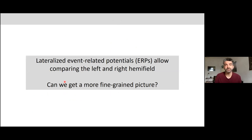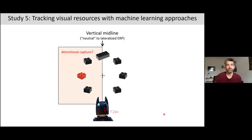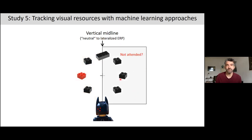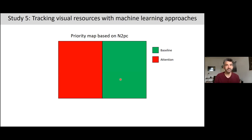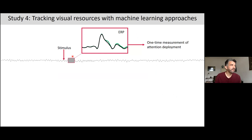To overcome the limitations of ERPs, we can use machine learning algorithms applied to EEG signals — specifically inverted encoding models (IEMs). While ERPs allow us to compare left versus right hemifield, giving a coarse priority map based on the N2PC component, IEMs allow us to measure attention deployment at different locations simultaneously. With IEMs we can also track over time and even look at the signal prior to stimulus onset.